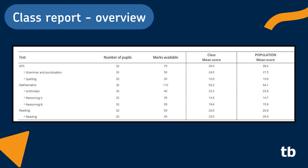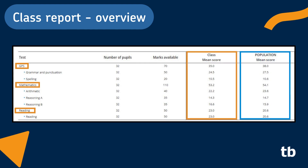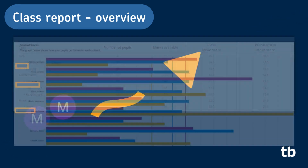The class overview table summarises your class performance in each of the tests: reading, GPS and maths. Once the Merit population data has been released, you can compare your class mean scores with the population mean score. This is a useful indicator of how your class is performing compared with other children who took the test in the same cohort.